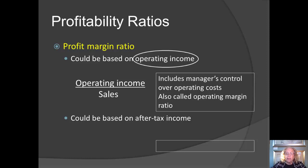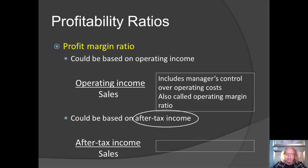Alternatively, if a firm prefers, it could use after-tax income in the numerator. In that case, the ratio would be after-tax income divided by sales revenue, so it would include not only the effect of operating costs but also tax effects. In either case, these ratios are telling us how many pennies are left in our income measure out of each sales dollar.